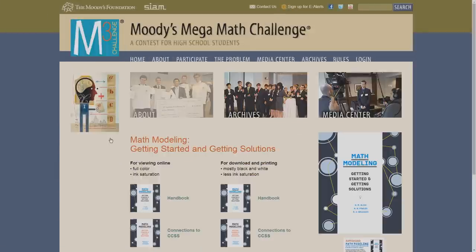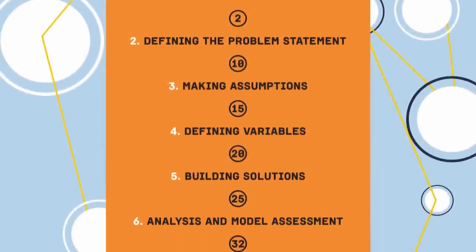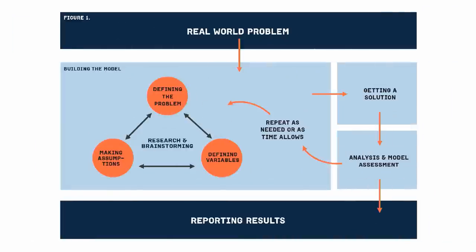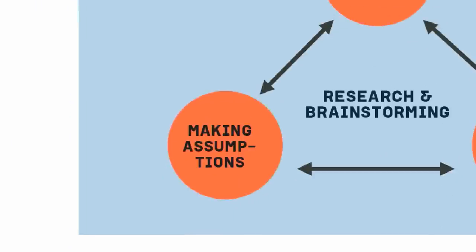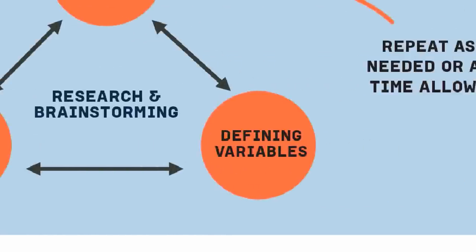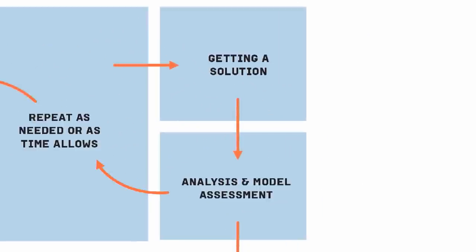To meet that need, the Society for Industrial and Applied Mathematics created Math Modeling: Getting Started and Getting Solutions, a free handbook that provides a basic process for building mathematical models. We like to view the modeling process not as a sequence of specific steps, but as different components that are revisited multiple times, including coming up with a concise problem statement, making assumptions, identifying key variables, and solving the model and analyzing results.